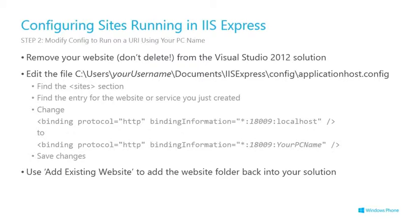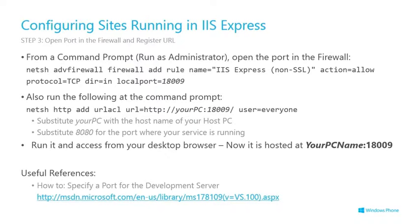Save the changes, then go back into Visual Studio and add the existing website folder back into your solution. Even that's not quite enough — you then need to run a couple of command prompts as administrator. First, open the port in the firewall using the netsh command for the port number (e.g. 18009). Also add a URL ACL reservation — the netsh http add urlacl command — with your PC's real name and port number. Then you can test with the desktop browser and your Windows Phone 8 emulator code will be able to access it.